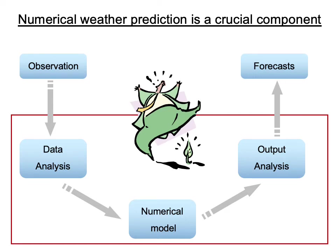A series of processes are required to produce a forecast from observation data. The red box represents numerical weather prediction, starting from data analysis, integration of the numerical model, and output analysis, which is processed in a supercomputer without human interruption. The numerical model is a comprehensive computer program depicting weather phenomena, which plays a central role in weather forecasting.